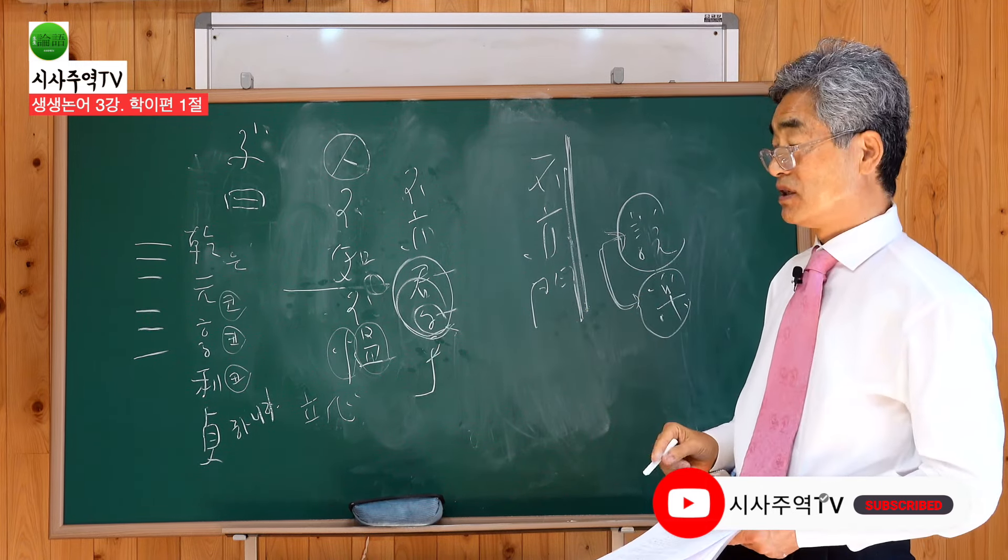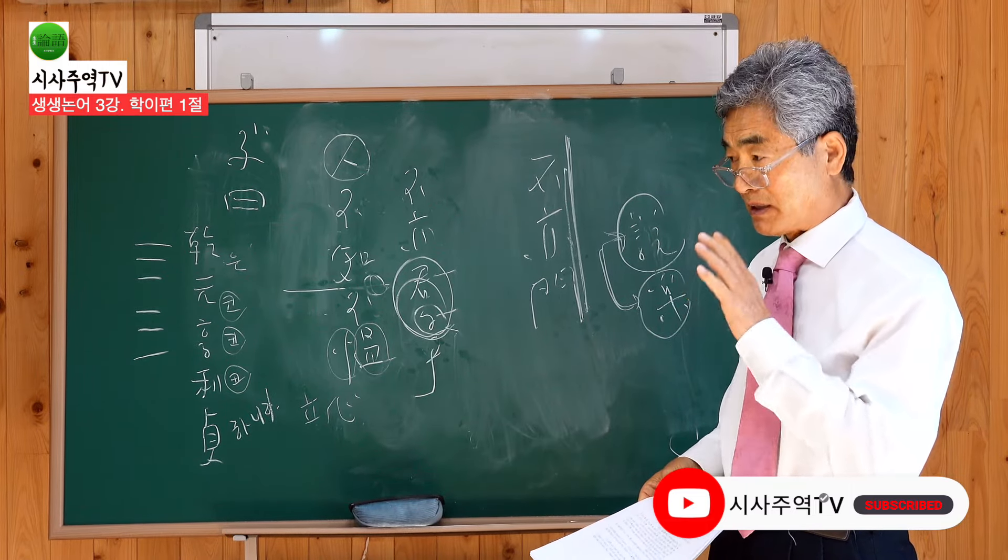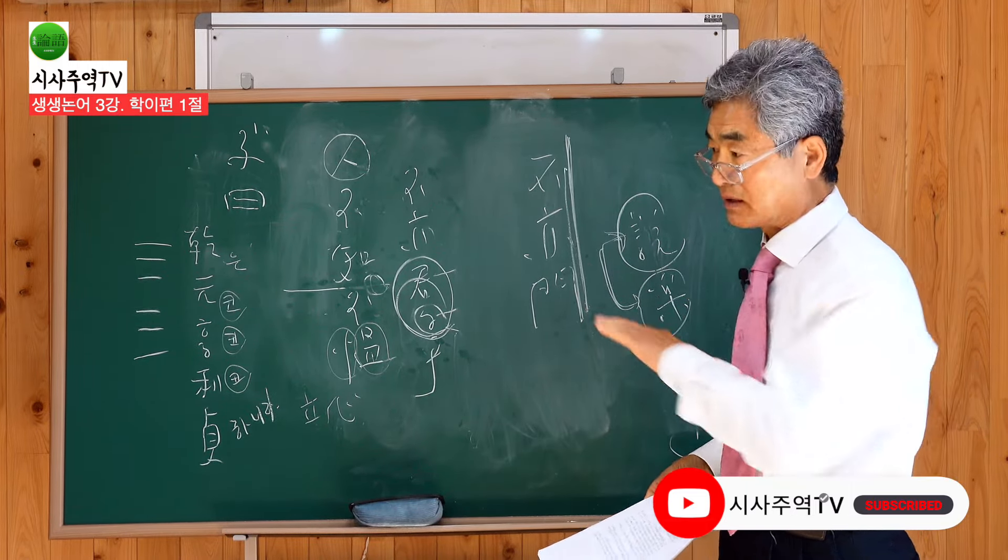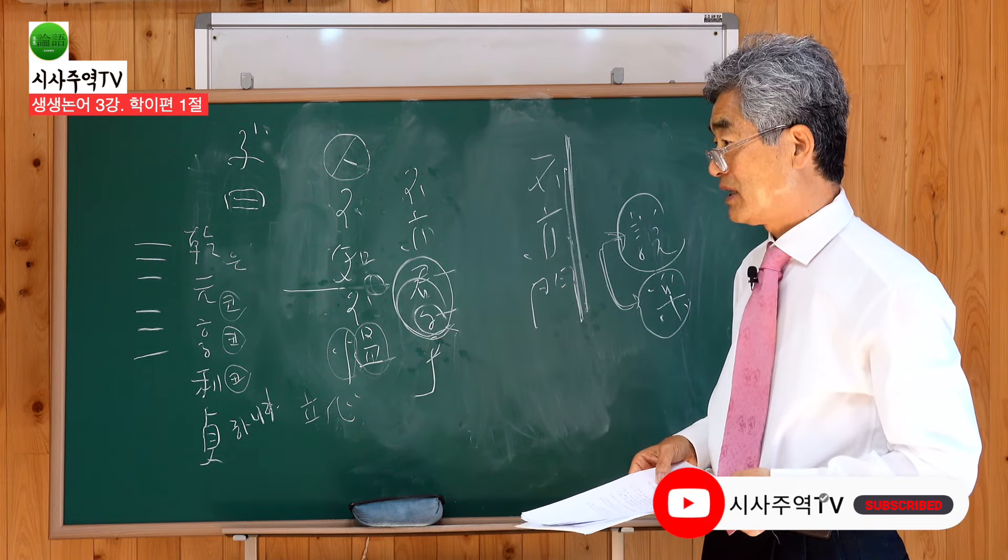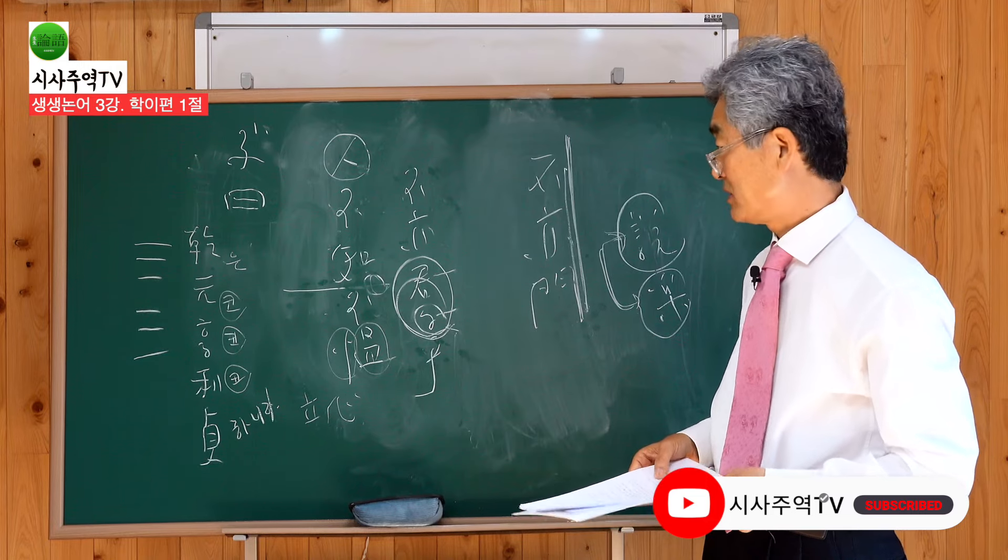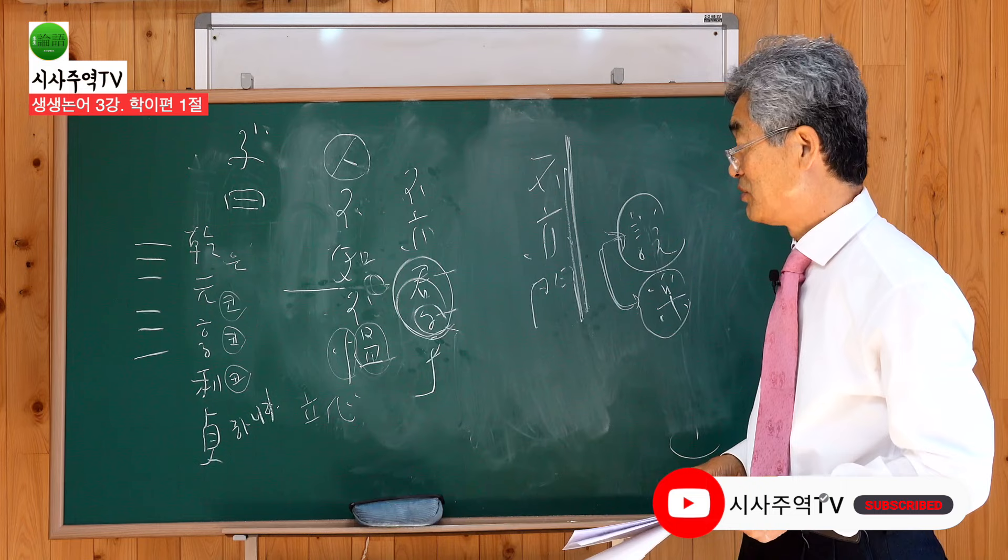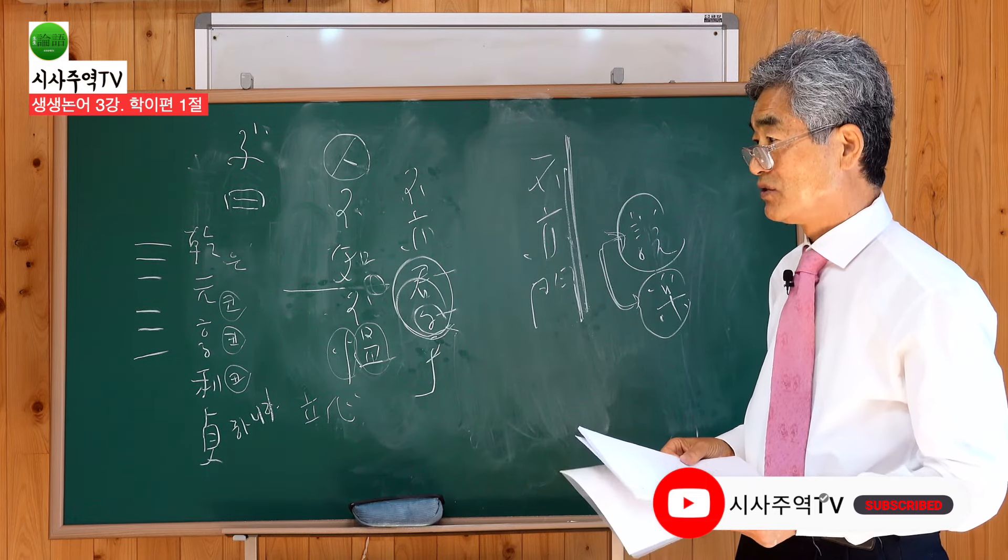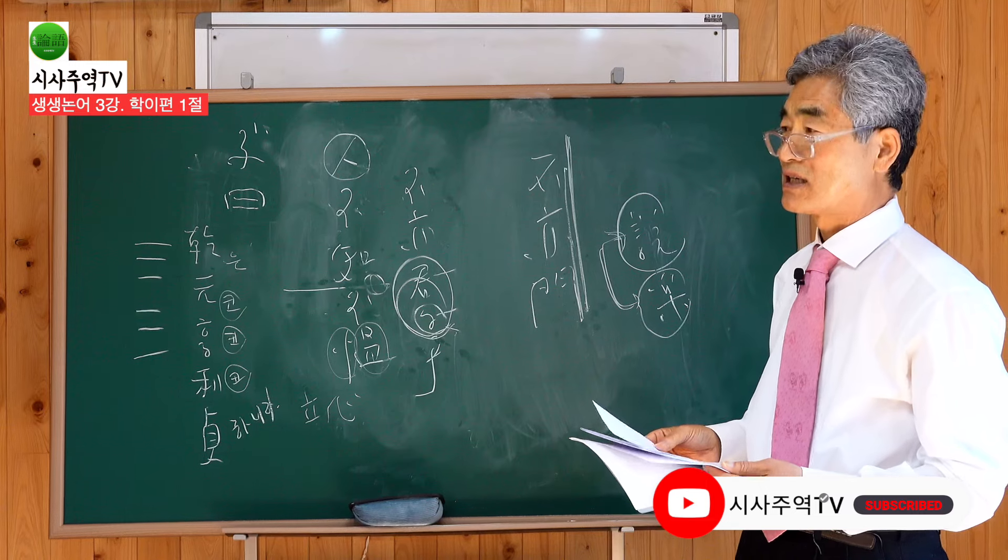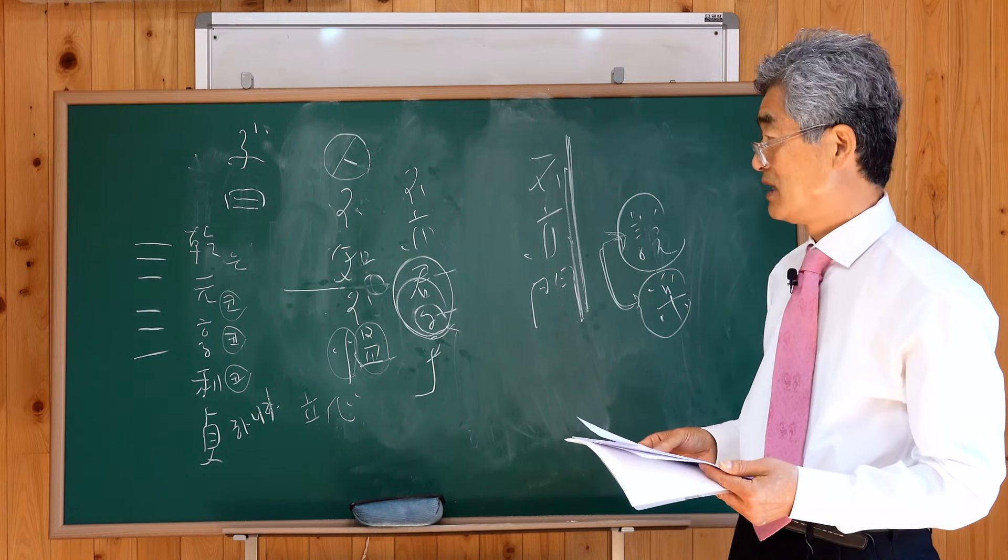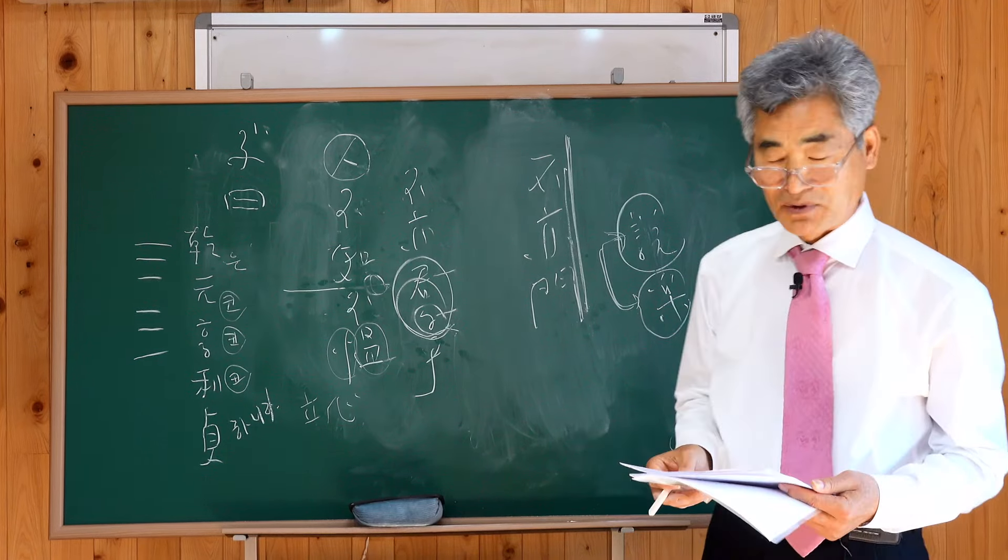불륜 문이 있고 안동의 도산서원 가보면 마당 왼쪽 문 들어갔다 마지막으로 빠지는 문이 있습니다. 어느 제자의 아버지가 희사를 했다고 그러죠. 불륜 문이 있습니다. 이래서 이 불륜을 상당히 중요시 했다 하는 걸 우리가 논허 하기장의 1장 1절에서 볼 수 있는 대목이었습니다.